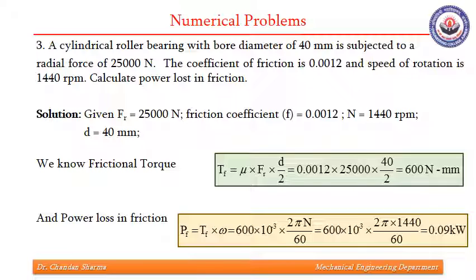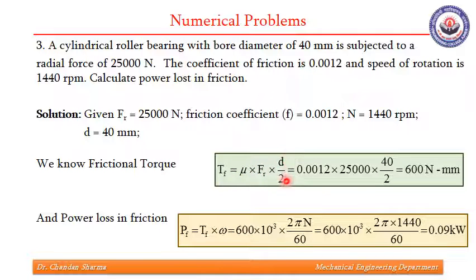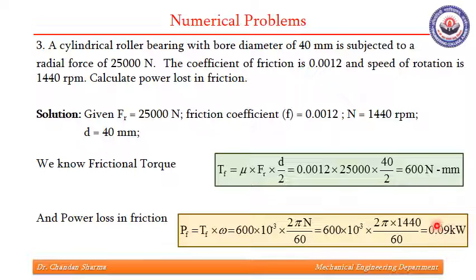The third question is a rather simple one. We are supposed to find the frictional torque and power lost in friction for a cylindrical roller bearing. Its bore diameter is given as 40 mm, radial force is given, friction coefficient is given, and speed of rotation is given. Frictional torque equals frictional force, which is μ·Fr, times the radius d/2, and it comes out to be 600 newton-millimeters. Power lost in friction is frictional torque times omega, and the answer comes out to be 0.09 kilowatts.